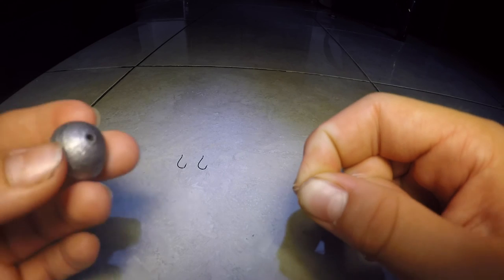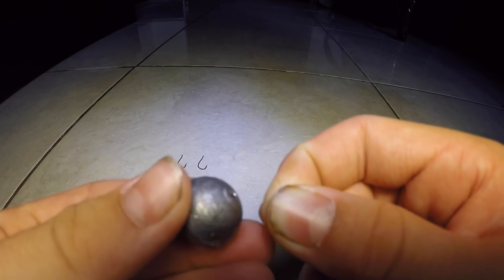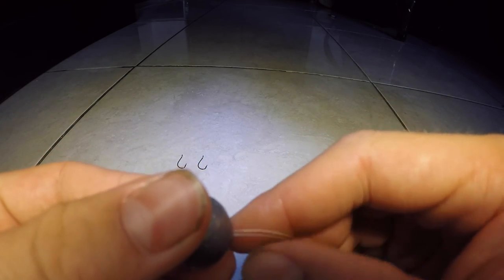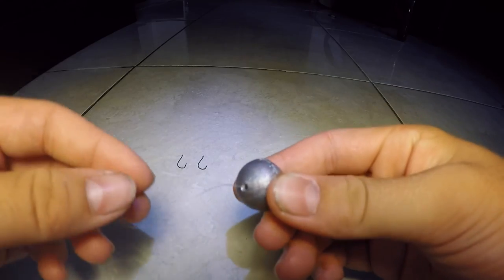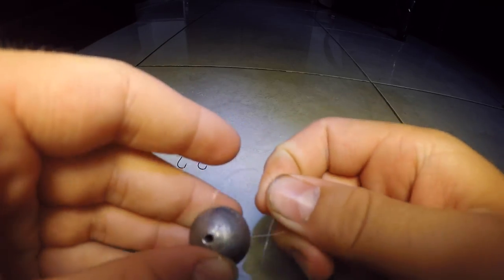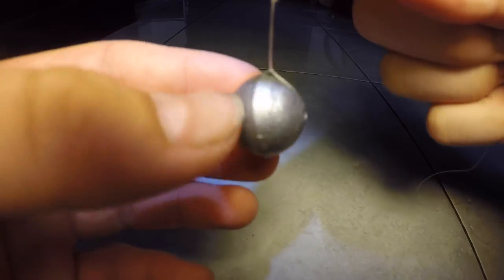So what you're going to do is squeeze the end together and then you're going to take your sinker and just push that loop through the sinker like that till it comes out the other end. So then you're going to loop it back over the sinker like that. Then all you need to do is pull it and there you go, so that is the first step complete.